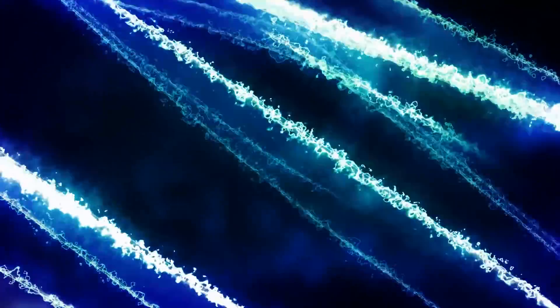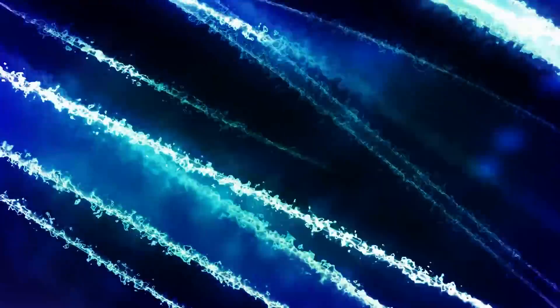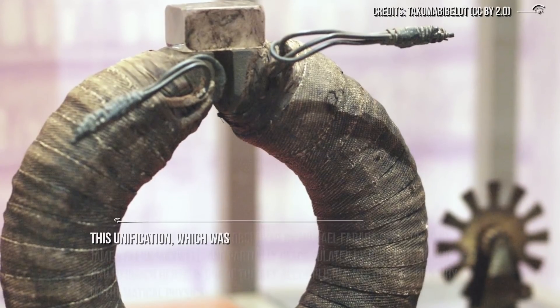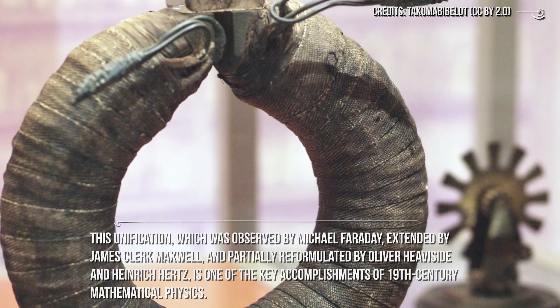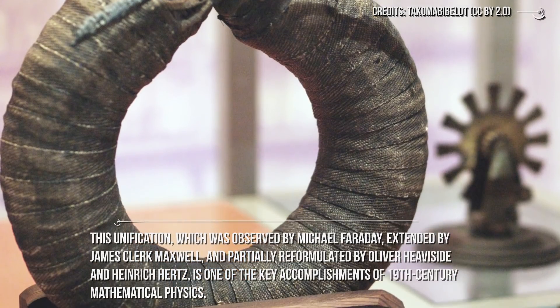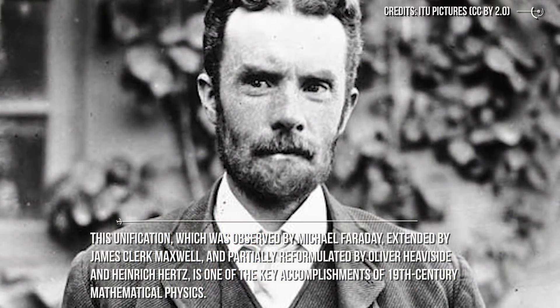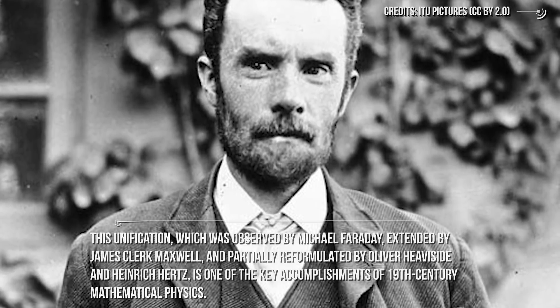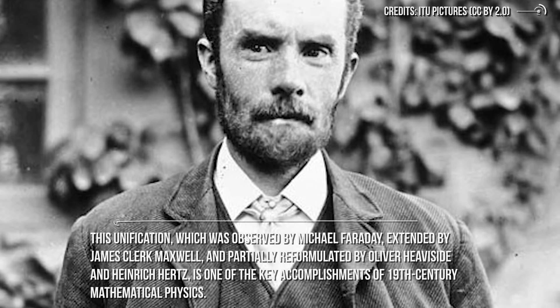After that, Ørsted's findings resulted in intensive research throughout the scientific community. They influenced French physicist Ampere's developments of a mathematical form to represent the magnetic forces between current-carrying conductors. Ørsted's discovery also represented a major step toward a unified concept of energy. This unification, which was observed by Michael Faraday, extended by James Clerk Maxwell, and partially reformulated by Oliver Heaviside and Heinrich Hertz, is one of the key accomplishments of 19th century mathematical physics.